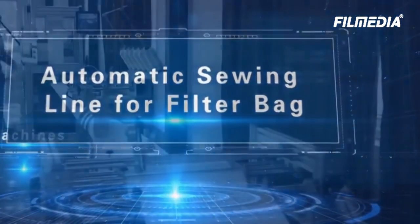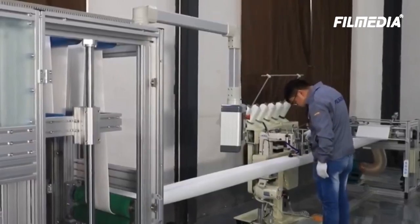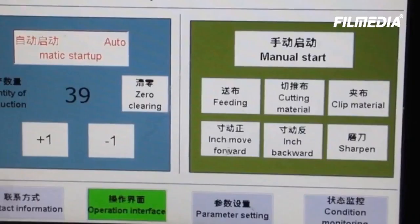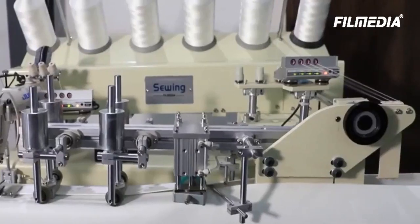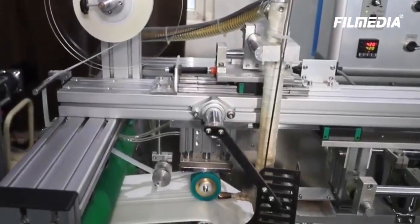Line for Filter Bag. Filter Sewing Brand Automatic Filter Bag Sewing Line can satisfy different production process requirements like basic sewing, hot welding, gluing, PTFE tape pasting, and etc.